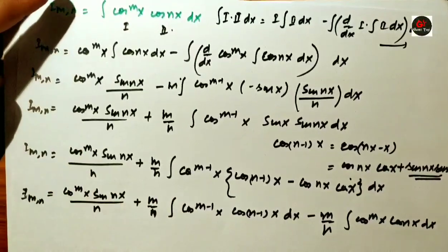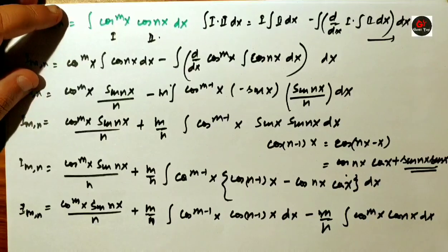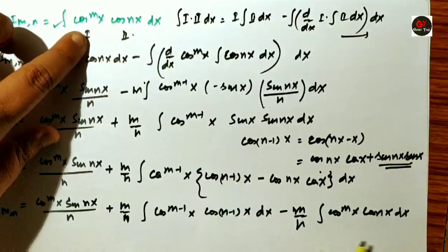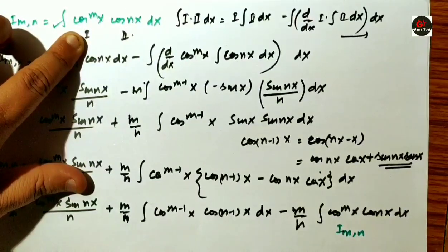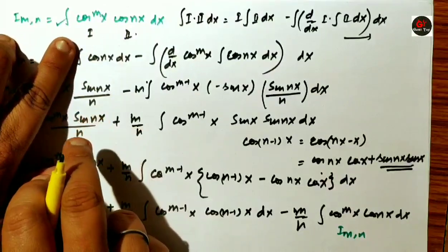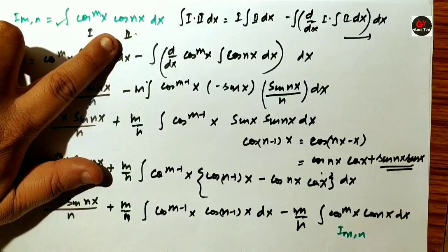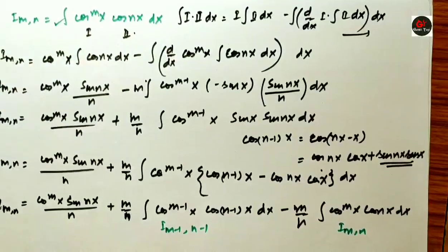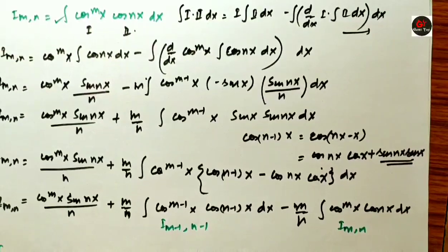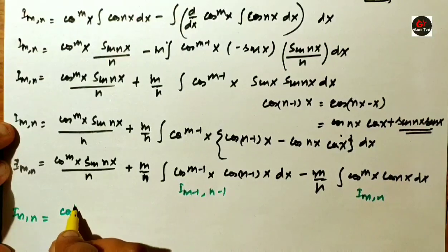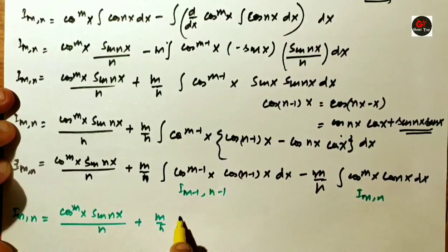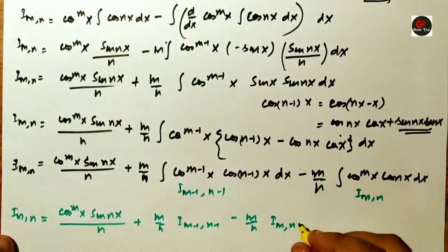Now notice how many integrals are matching. The integral of cos^m(x)·cos(nx) is I_mn, the integral of cos^(m-1)(x)·cos(n-1)x is I_(m-1, n-1). So we can write: I_mn = cos^m(x)·sin(nx)/n + m/n · I_(m-1, n-1) minus m/n · I_mn. The last term matches the left-hand side, so we shift it to the left.